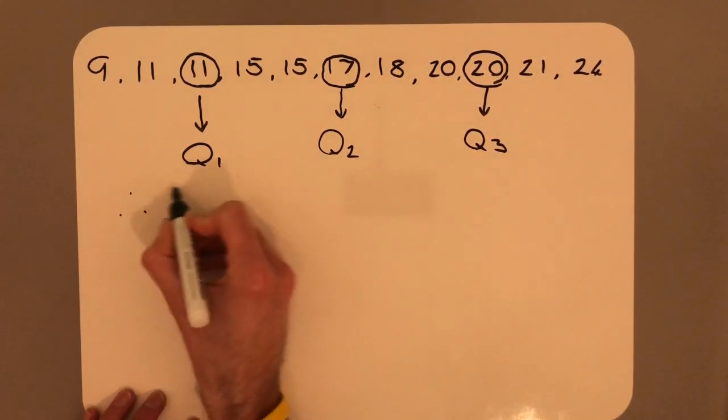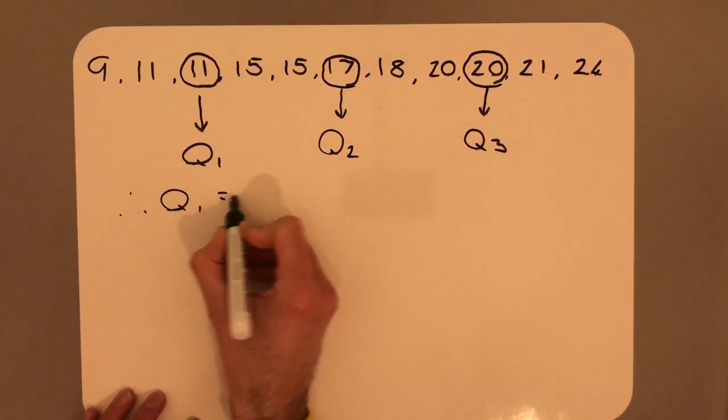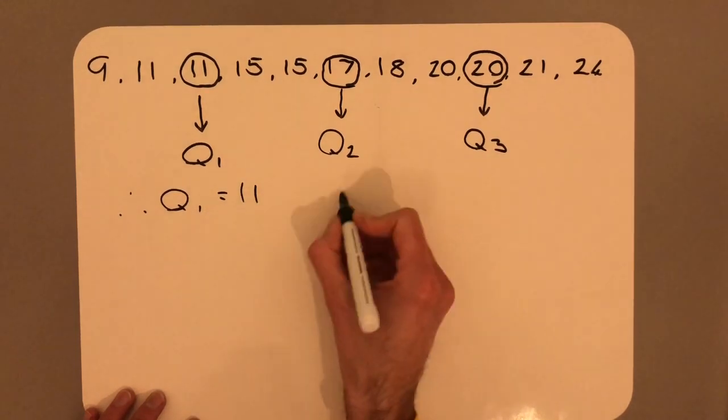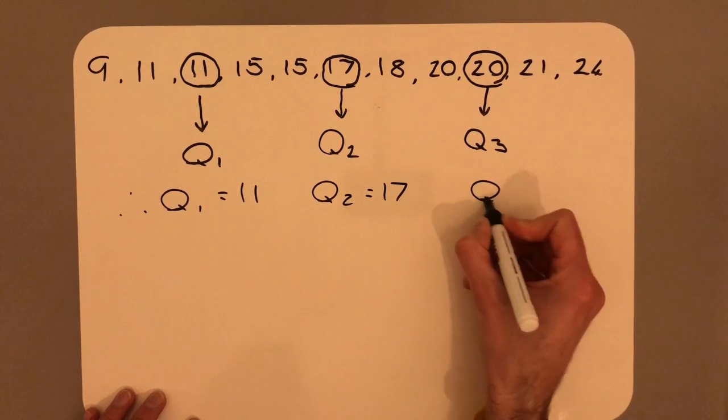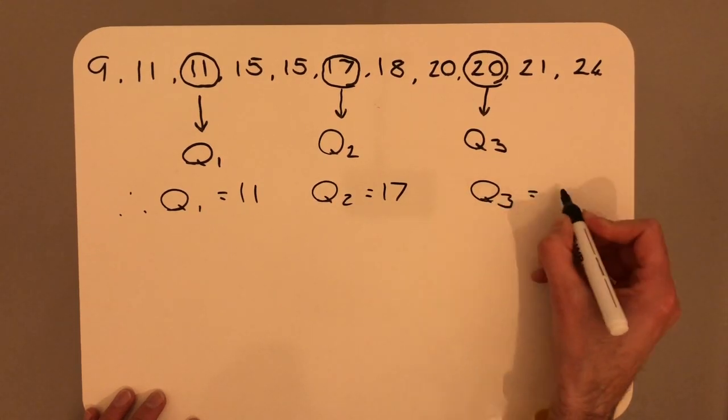Therefore, Q1 will be 11, Q2 is 17, Q3 is 20.